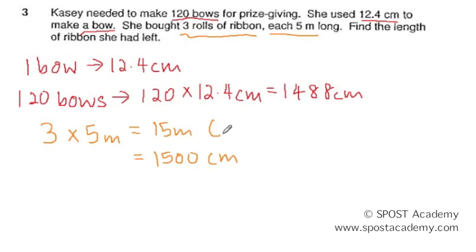Remember that 1 meter is equal to 100 cm. Therefore, 15 meters is equal to 15 times 100, and that will give us 1,500 cm.